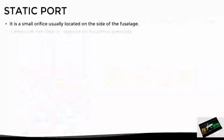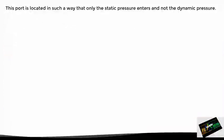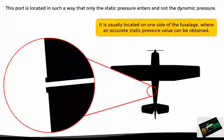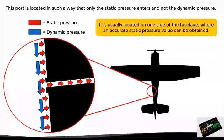Let's now move on to the other component of the system: the static port. This consists of a small hole normally located on the side of the fuselage, and it measures the air static pressure, or in other words, the atmospheric pressure. This static port is located in such a way that only the static pressure is allowed to enter and not the dynamic pressure. Normally, this port is located on one side of the fuselage where a precise pressure value can be obtained. Since the static pressure is exerted in all directions while the dynamic pressure is exerted only opposite to the plane's path, only static pressure enters the port.